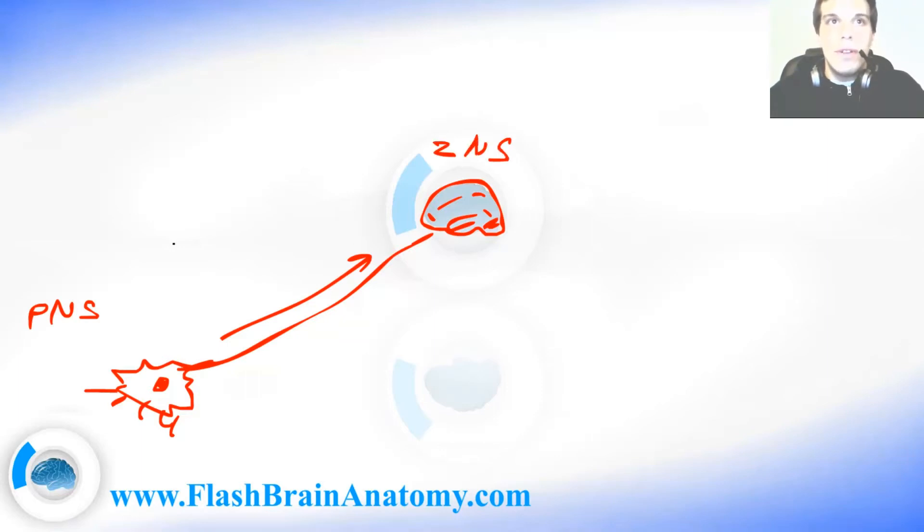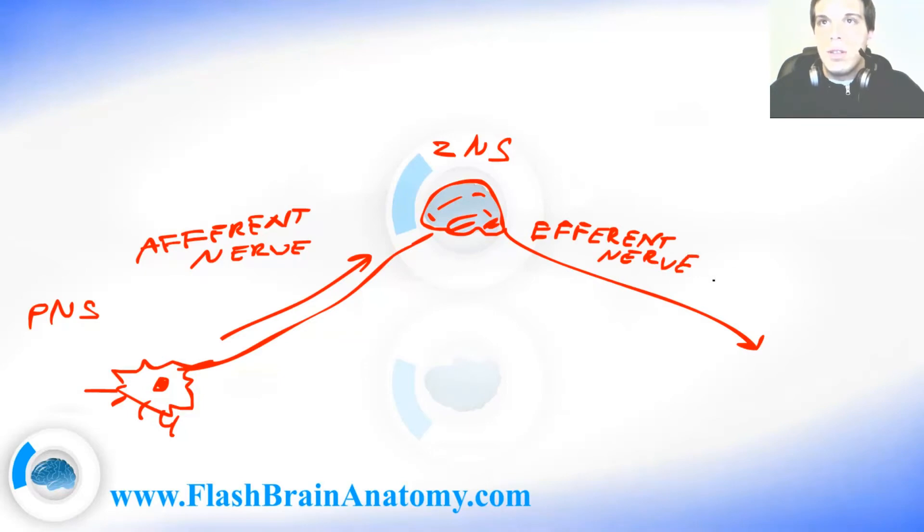So this is the afferent nerve. And the signal comes to the brain. The brain changes it, modifies it, and it can save it, and it can also answer the signal. So we have another efferent nerve that transfers the signal again in the peripheral nervous system.